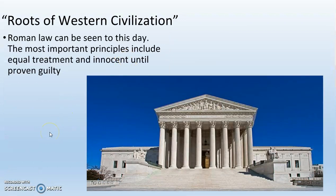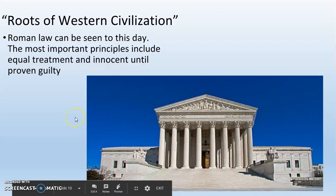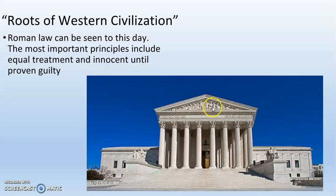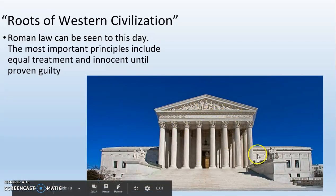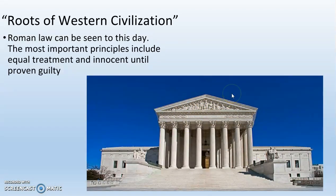Probably the most important legacy other than government is Roman law. Some of the most important principles in our Constitution — like equal treatment under the law and innocent until proven guilty — were created by the Romans and copied by us. The U.S. Supreme Court building is a great example of Roman architecture: we see the triangular frieze, columns, and the grand staircase — Roman architecture influencing our government in Washington, D.C., to this day.